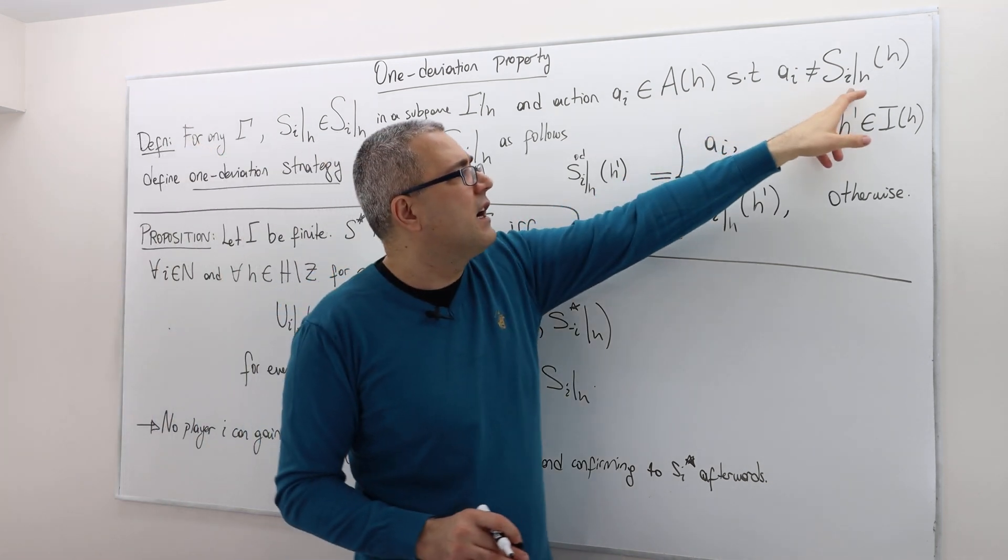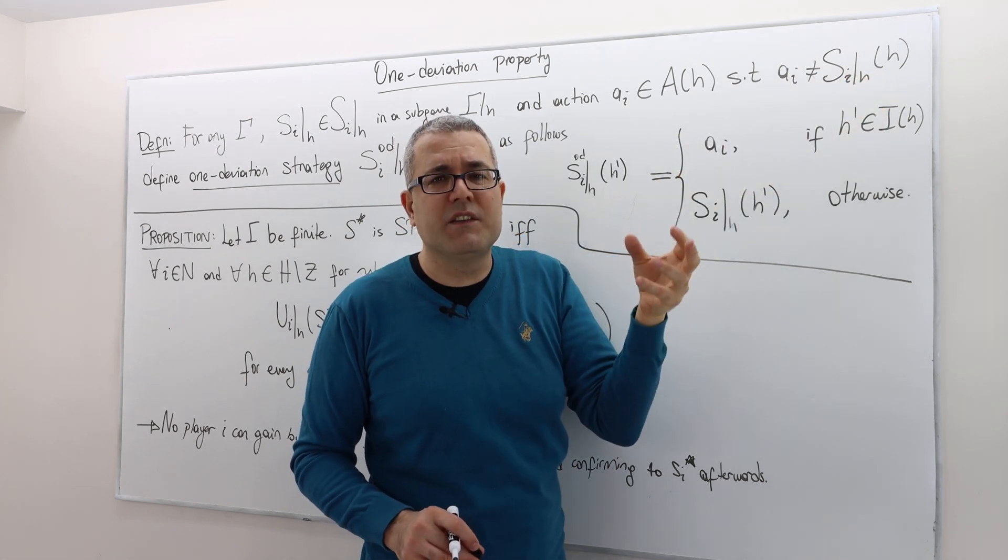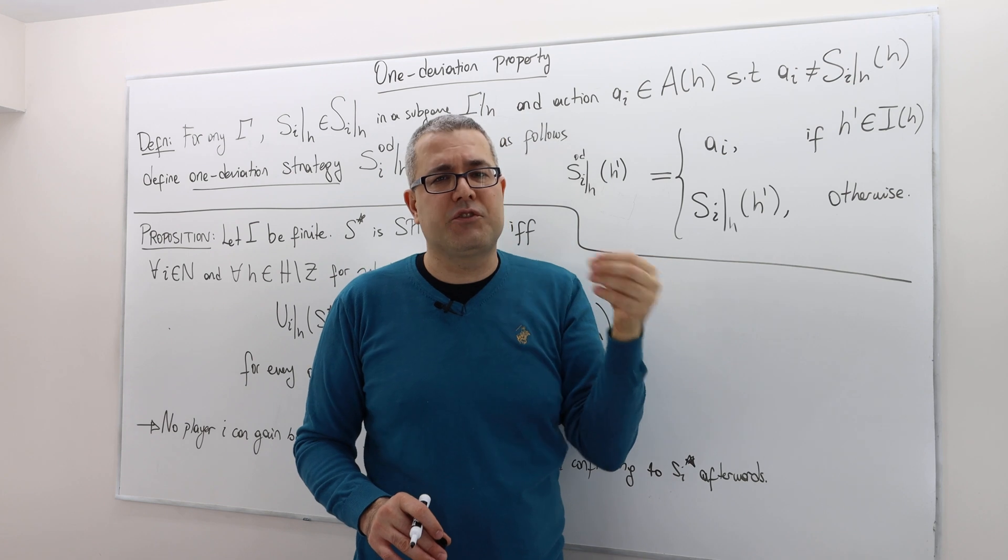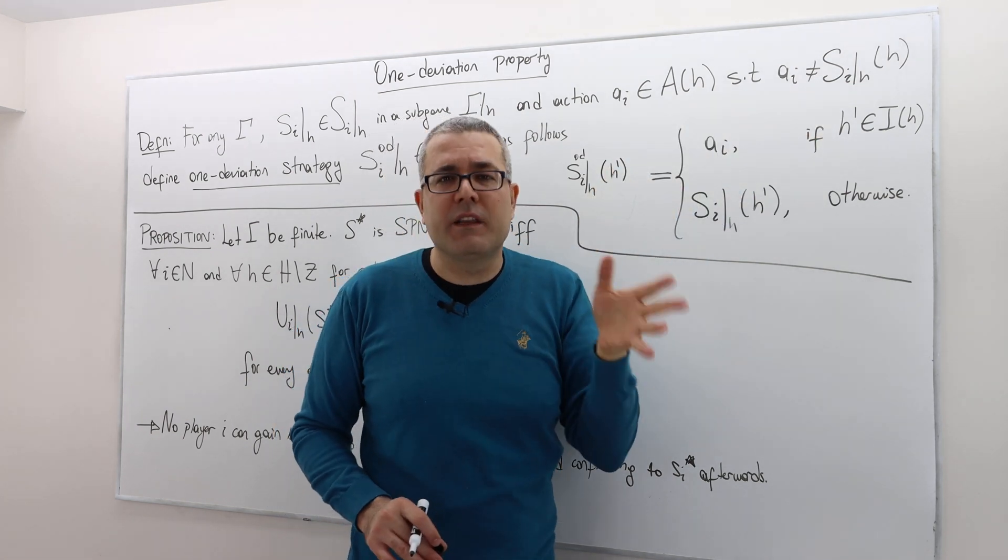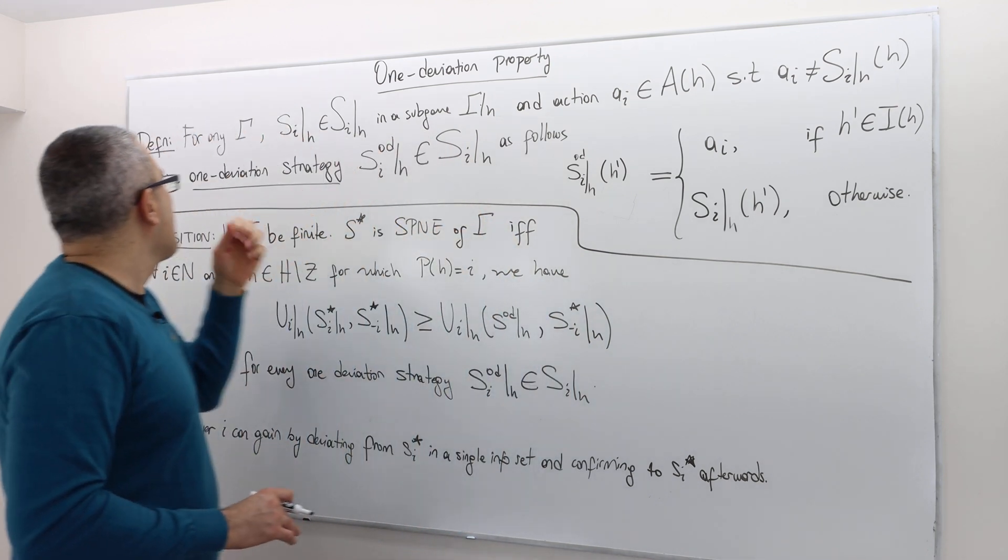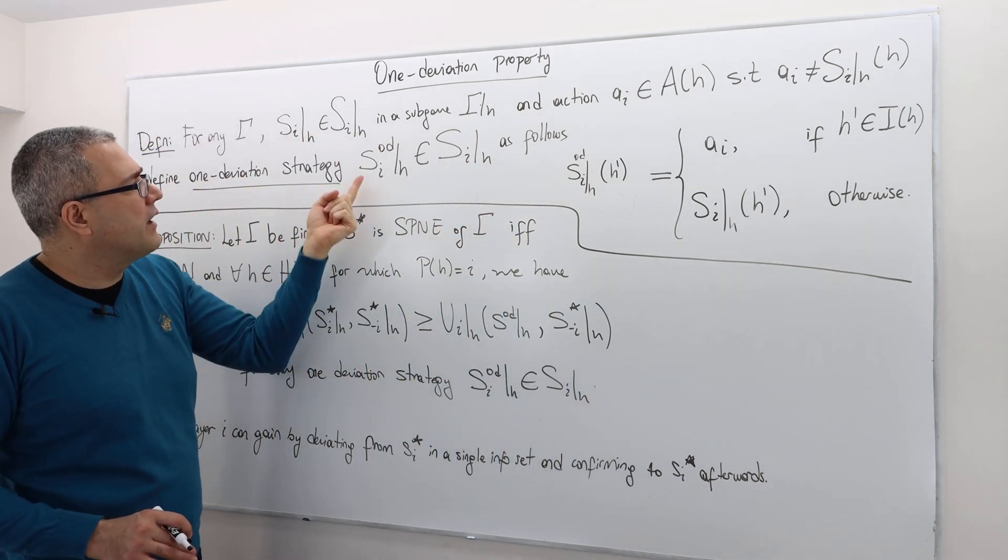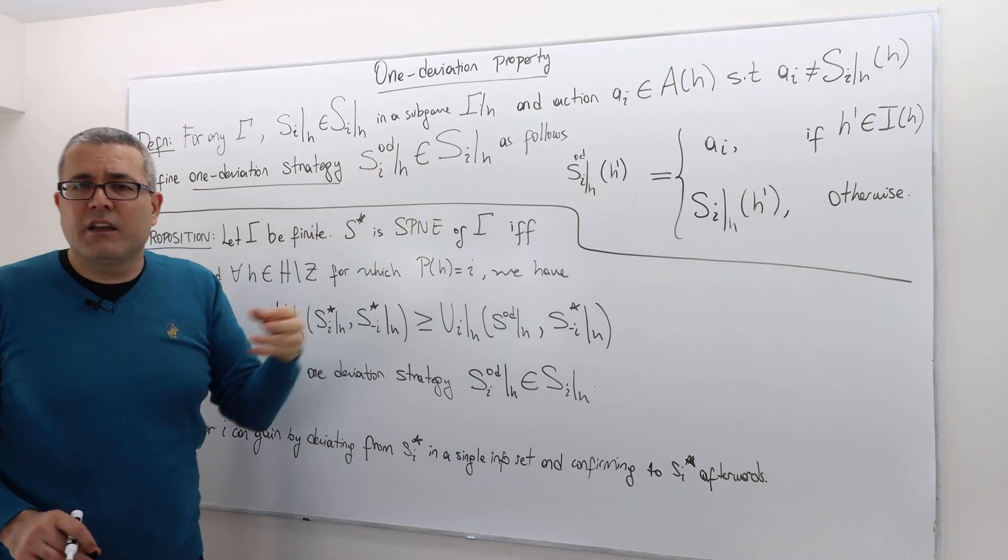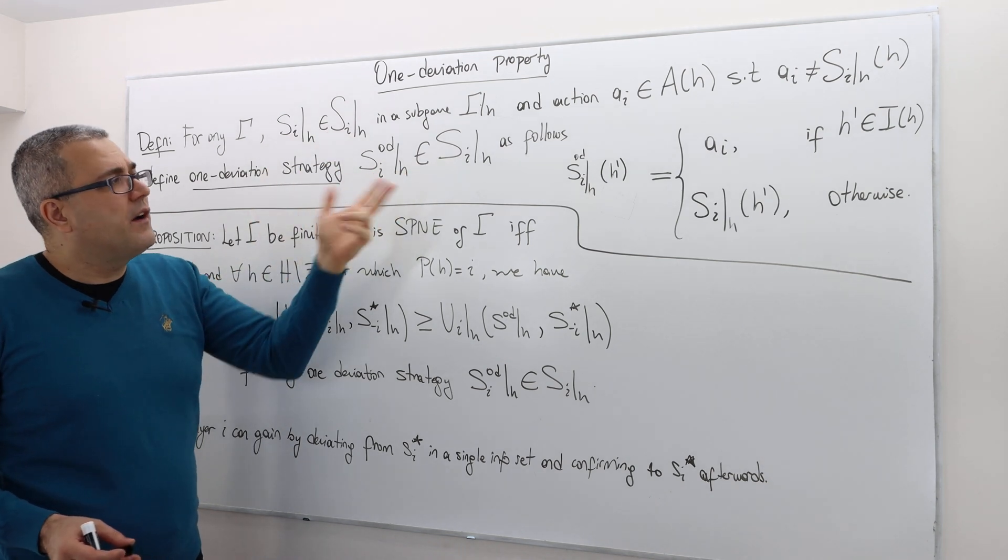Remember, SI slash H, parenthesis H, says what player I is going to play after history H, what action. So AI is different than that action. Then we define one deviation strategy. We denote it as S sub I OD slash H, which is again, a continuation strategy. And we define it as follows.